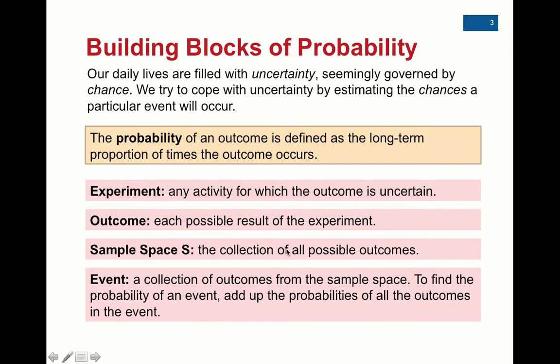The experiment is anything we conduct, and each experiment has different outcomes. The list of all outcomes is the sample space. When rolling a die, the sample space is 1 through 6; when flipping a coin, it's heads or tails. When counting things like the number of times a student showed up late to class, the sample space goes from 0 up to the total number of classes. An event is a collection of outcomes — for example, with rolling a die, an event could be rolling an even number, which covers three different outcomes: 2, 4, and 6.